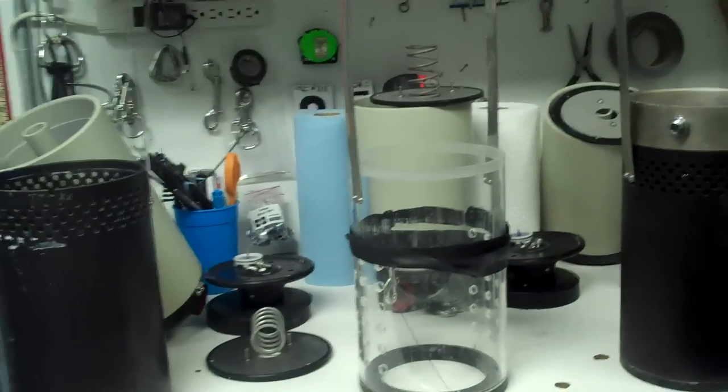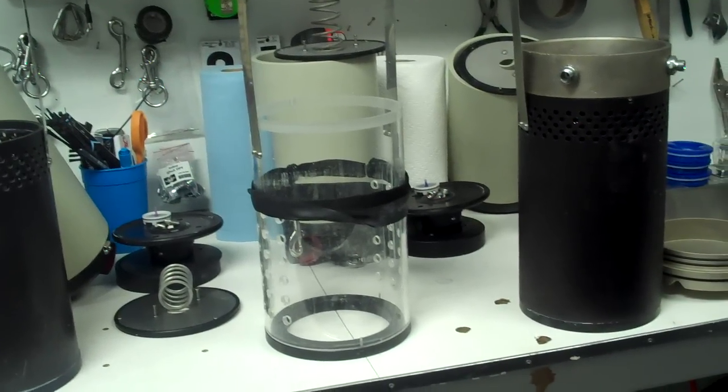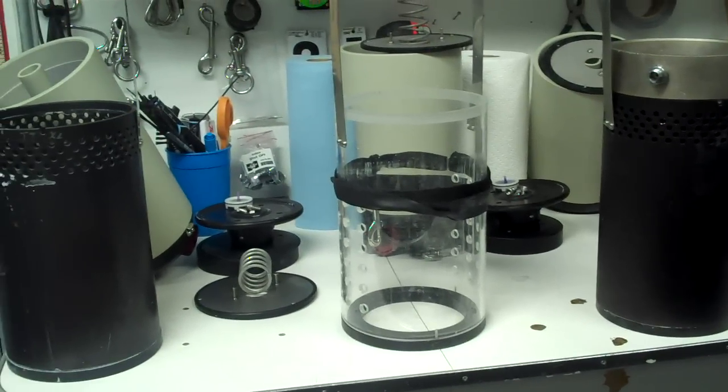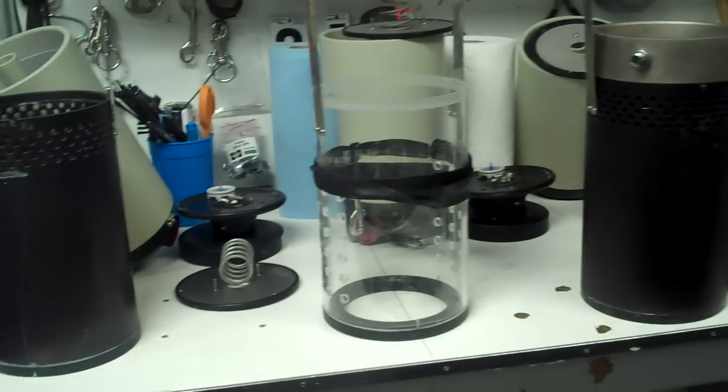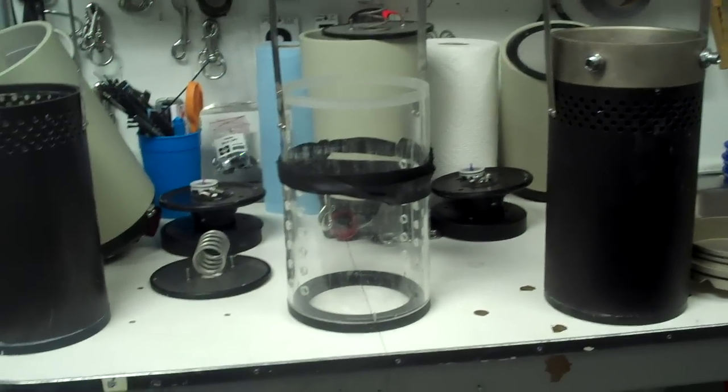Here we've got three of our different rebreathers. The one in the middle is the lower half of the travel breather, and then we have on the left and the right the main and the deco rebreather.